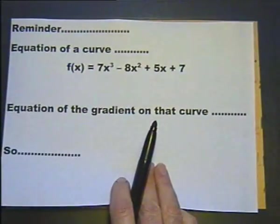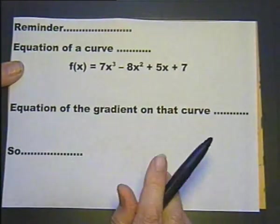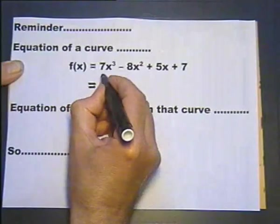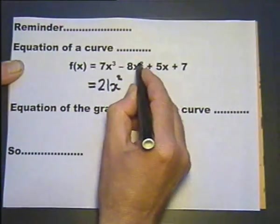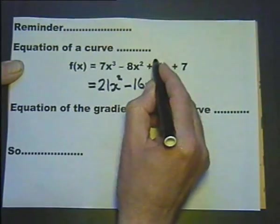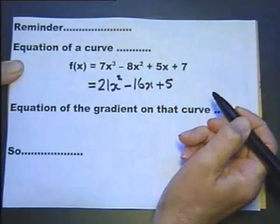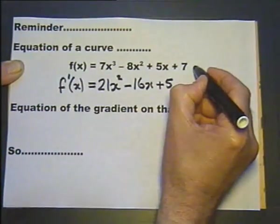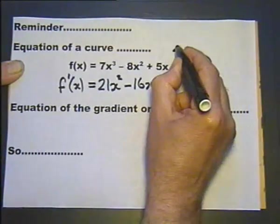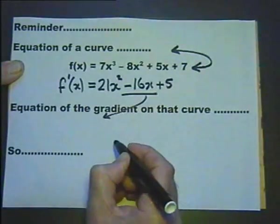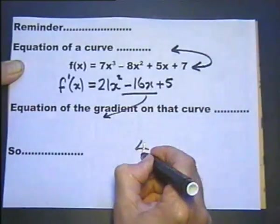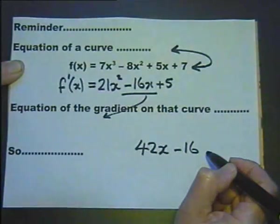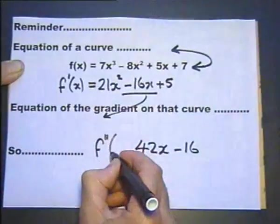Just another reminder about another way of writing this information. We could write the equation of the curve as a function f(x). We differentiate as before — three-sevenths of x³ to 21x², two-eighths of x² to 16x, differentiate 5x to get 5, and the constant disappears — and we indicate the first differential by putting a dash: f'(x). The second differential is indicated by putting f double dash: f''(x).